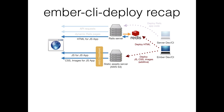A quick recap on Ember CLI Deploy for those not fully aware. Essentially you have your Ember dev server, and Ember CLI Deploy will push an HTML file to Redis. Your Rails server will then pick that up from Redis — you can use non-Redis deployments, but that's a fairly typical one. The Rails server picks up the HTML file, sends it down to the browser, and at the same time Ember CLI Deploy pushes the static assets — JS, CSS, and so on — up to AWS S3, where the browser can pull them down.